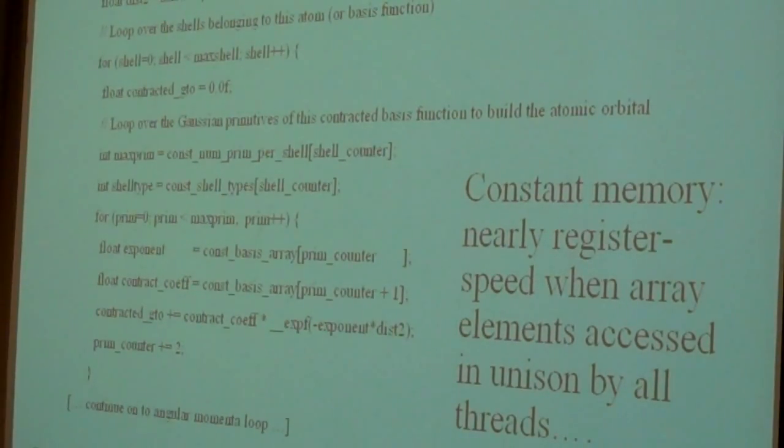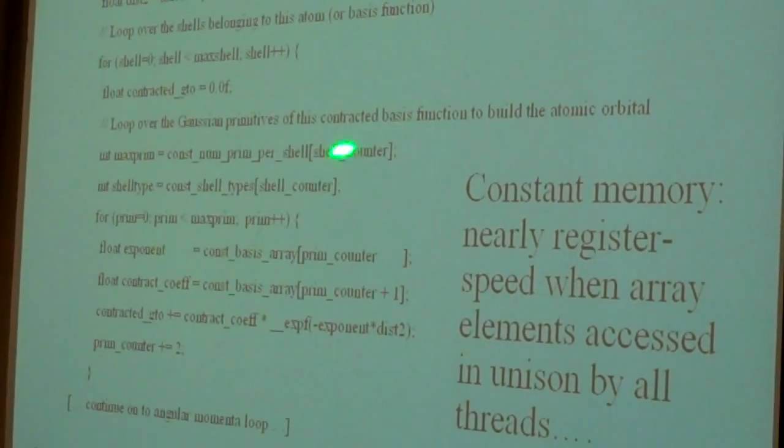And so if we can fit all those coefficient arrays in constant memory, every thread is computing its own orbital amplitude at its own position because these are all distance-dependent functions, right? So they have their own distance from their own atoms that they're calculating. And then they sum up all those different equations and they get a different answer.